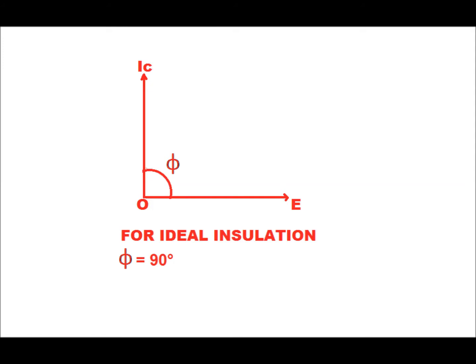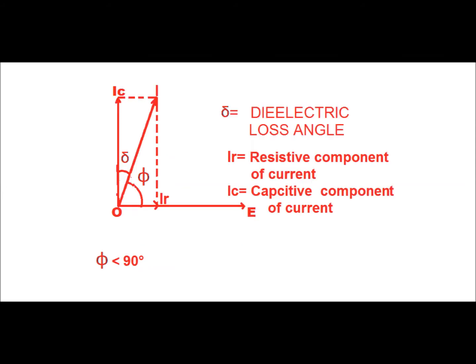An insulator can be considered as a capacitance. In the ideal case, the capacitance current IC leads the voltage E by 90 degrees — phi is equal to 90 degrees for ideal insulation. But in practice, there is no ideal insulation; there exists some leakage current IR, and that is in phase with the applied voltage E.